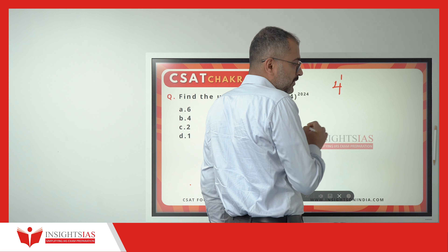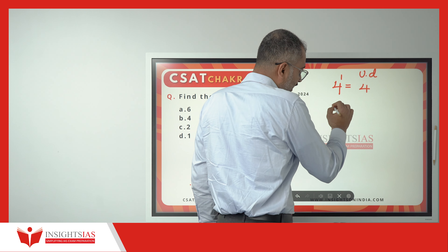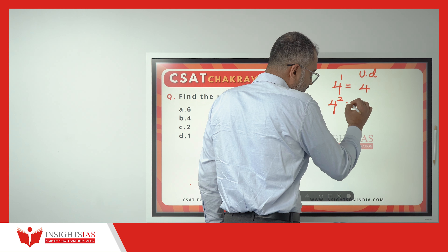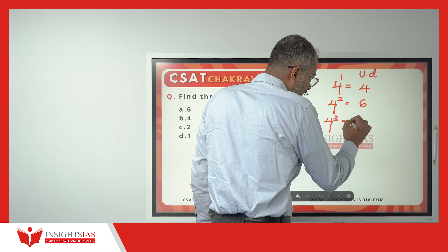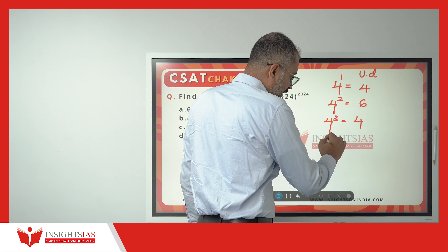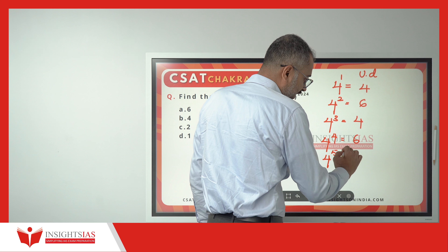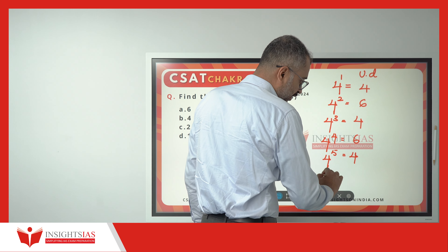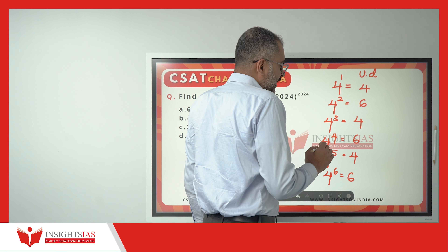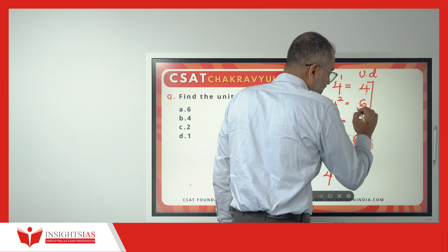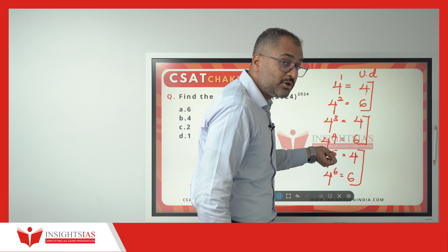4 to the power 1 — the unit digit is 4. 4 squared — unit digit is 6. 4 cubed — unit digit is 4. 4 to the power 4 — unit digit is 6. 4 to the power 5 — unit digit is 4. 4 to the power 6 — unit digit is 6. If you keep on moving, you will either get 4 or 6, for any power of 4.